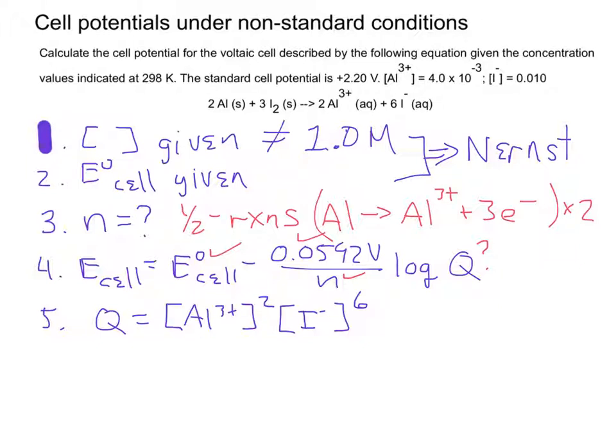So, now, after you've done that, we can find Q, and then it's just a matter of doing the math and keeping everything straight. And your final answer for this should be that the cell potential is a positive 2.37 volts.